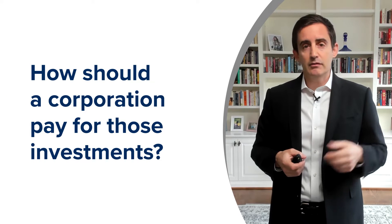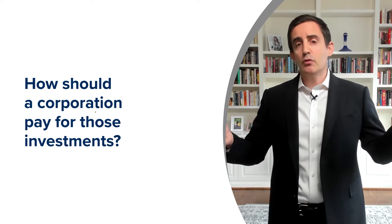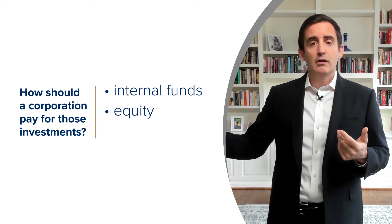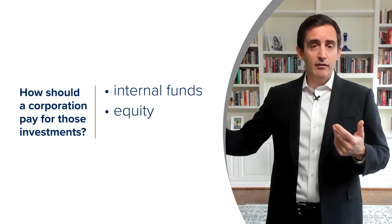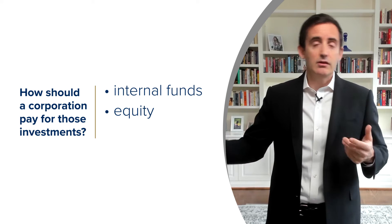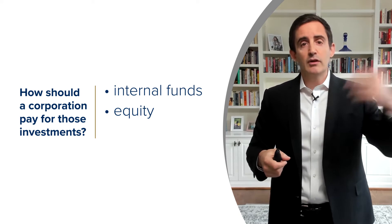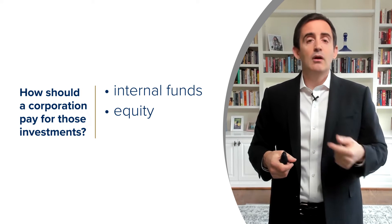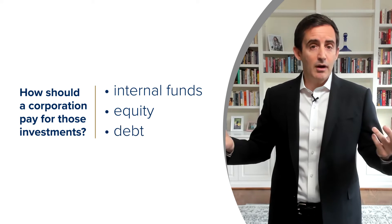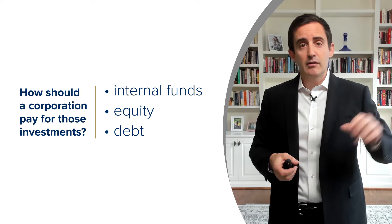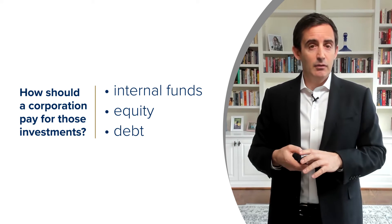The second big picture question is: how should a corporation pay for those investments? Very generally, you have three choices. You can use internal funds, you can issue shares — issue equity — where new owners come in and own part of the corporation and pay money to existing shareholders which the firm can use to invest. Or of course you can borrow money, issue bonds, or borrow from the bank. That's the second big question: how do we finance the different investments that we want to make?